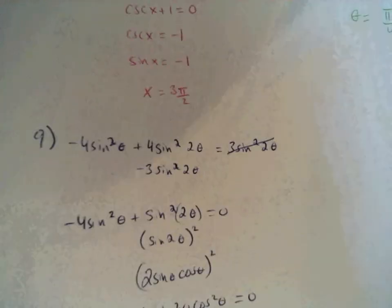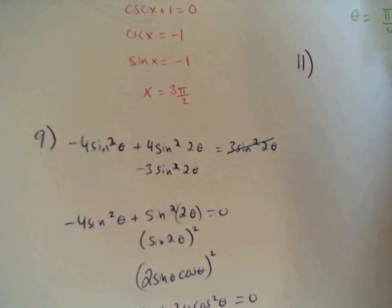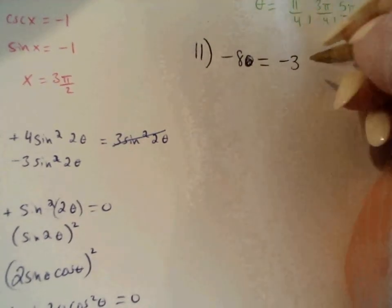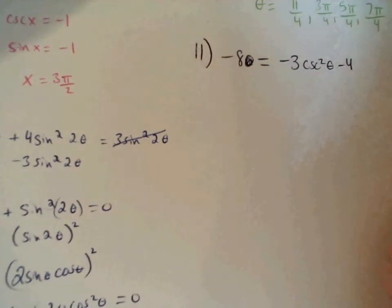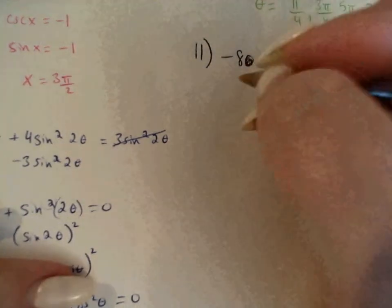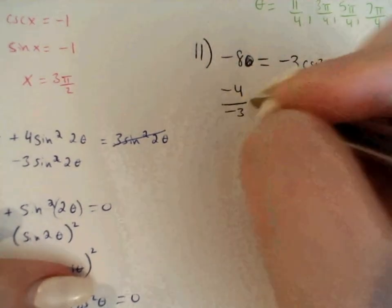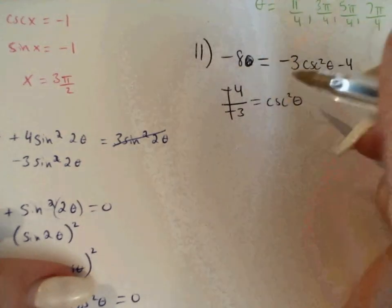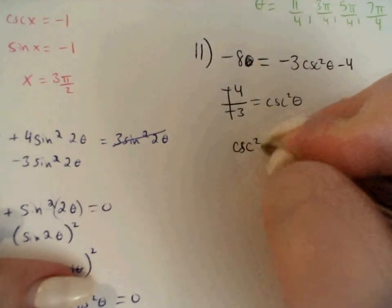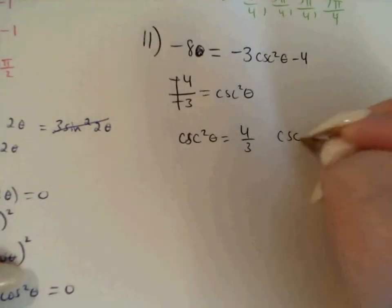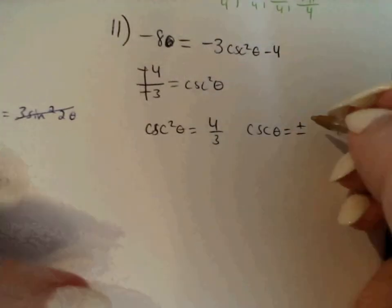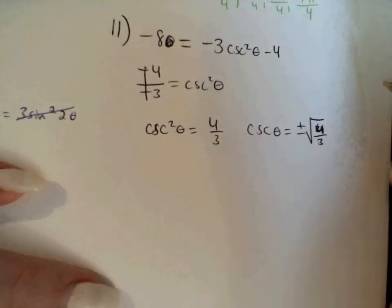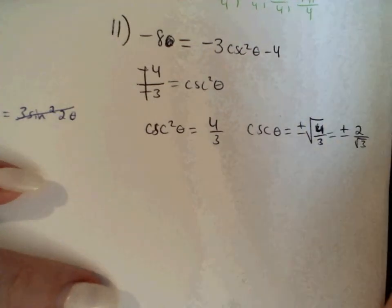Number 11 says negative 8 equals negative 3 cosecant squared theta minus 4. I'm trying to solve for cosecant squared. I'll add the 4, giving negative 4. Then divide by negative 3, which becomes positive, so cosecant squared equals 4/3. Taking the square root gives cosecant equals plus or minus 2 over the square root of 3. The square root of 4 is 2, so it's plus and minus 2 over the square root of 3.